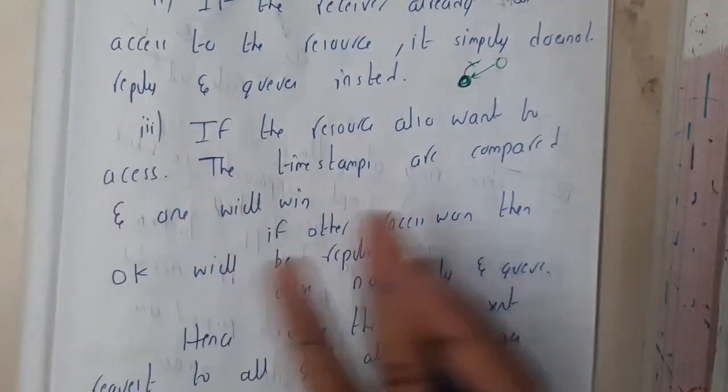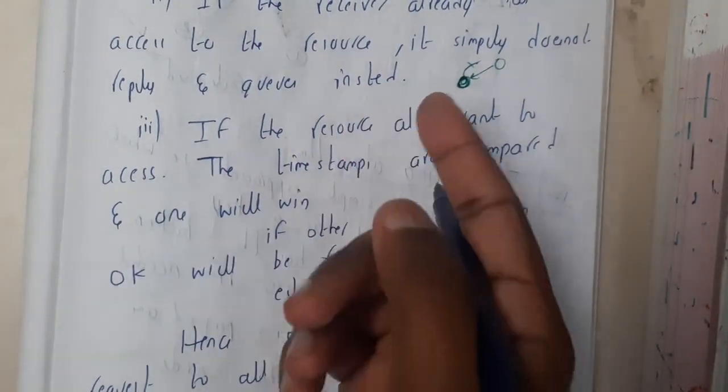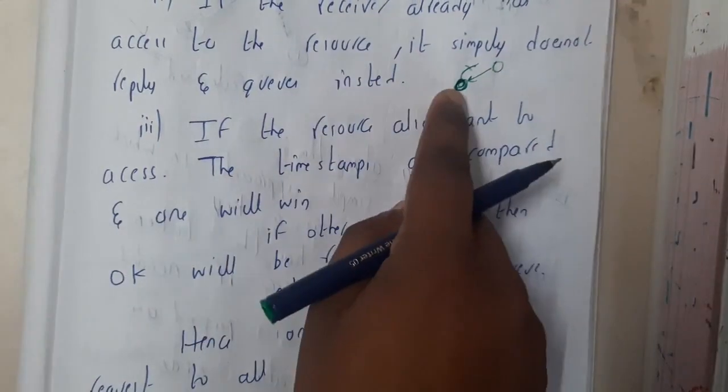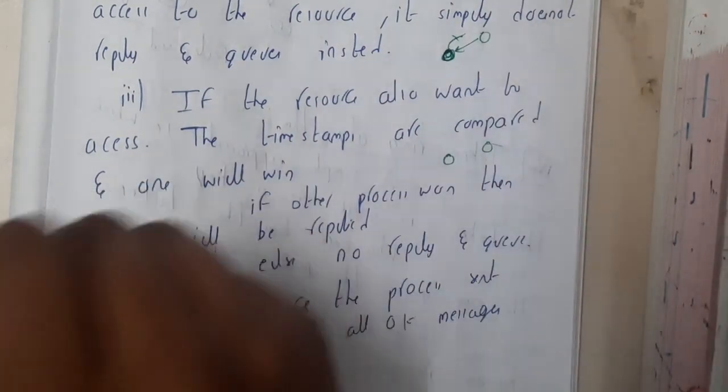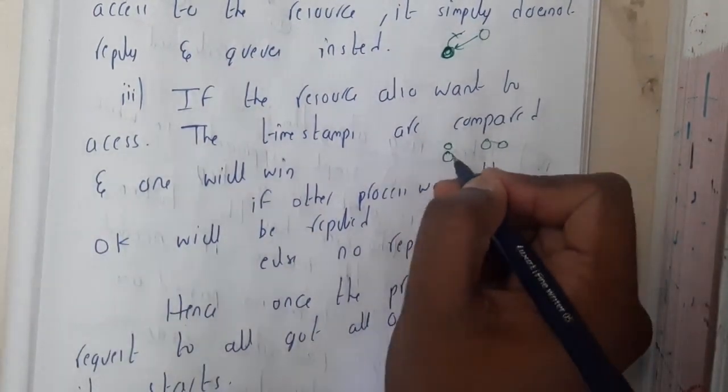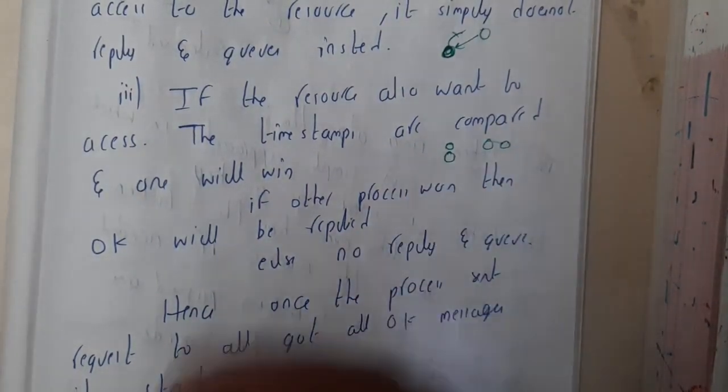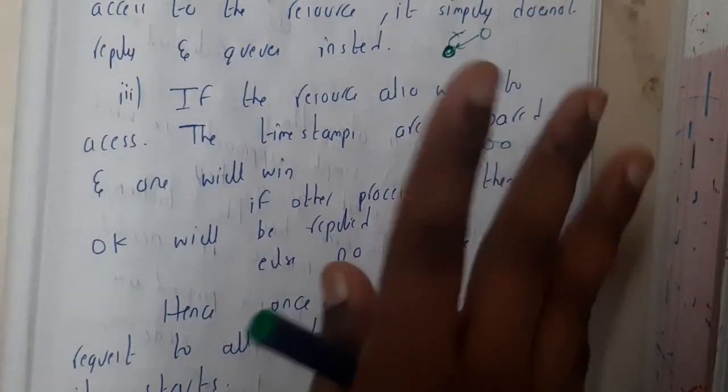The third case is if the resource is also needed by that particular new process. Assume that the new process also wants the resource. Then your timestamp and their timestamp is compared, so whoever is less, that is whoever requested first, will get the chance.